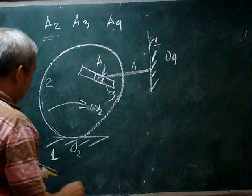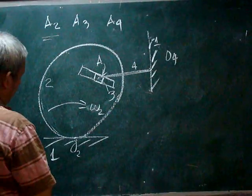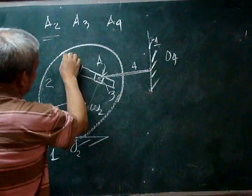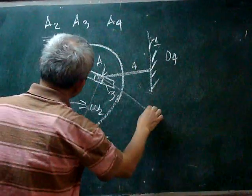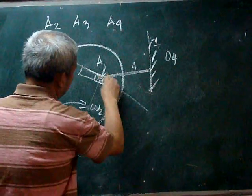We can determine the velocity of that point A in body 2. And that has to be perpendicular to that line. So that is our vector.